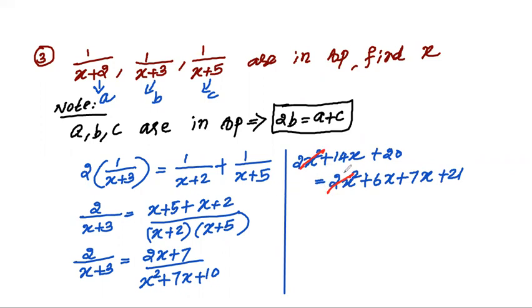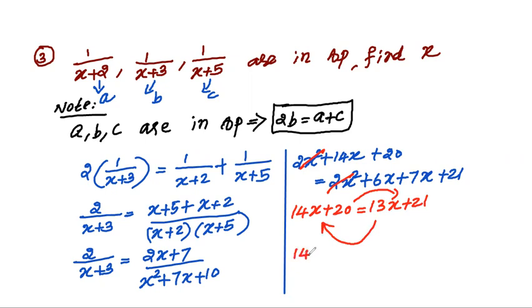Going for cross multiplication: 2 into x squared plus 7x plus 10 equals 2x plus 7 into x plus 3. Expanding both sides: 2x squared plus 14x plus 20 equals 2x squared plus 6x plus 7x plus 21. The 2x squared cancels, leaving 14x plus 20 equals 13x plus 21, so x equals 1. That is the end of question number 3.